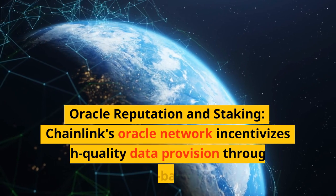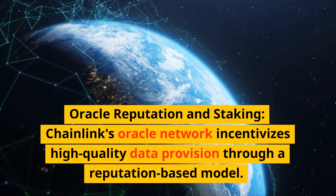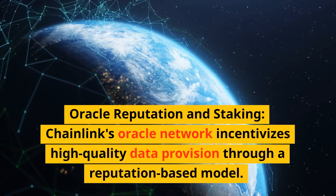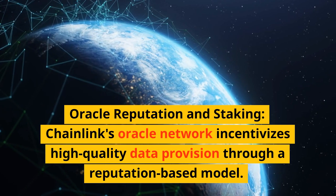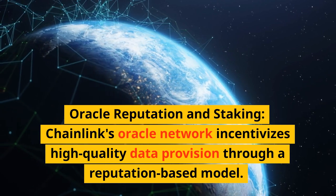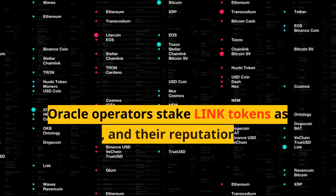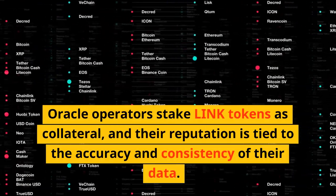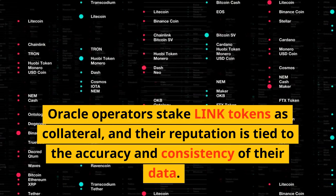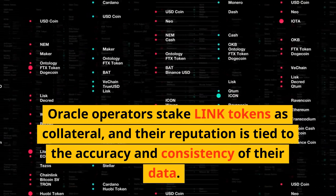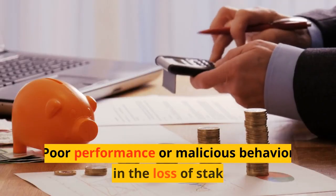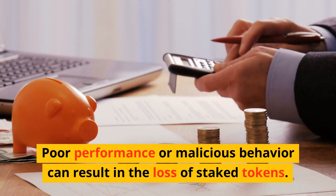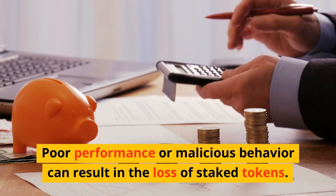Chainlink's Oracle Network incentivizes high-quality data provision through a reputation-based model. Oracle operators stake LINK tokens as collateral, and their reputation is tied to the accuracy and consistency of their data. Poor performance or malicious behavior can result in the loss of staked tokens.